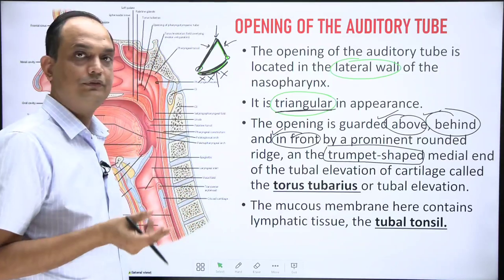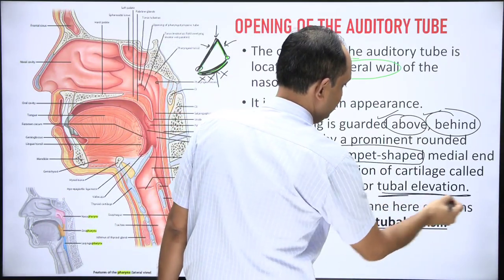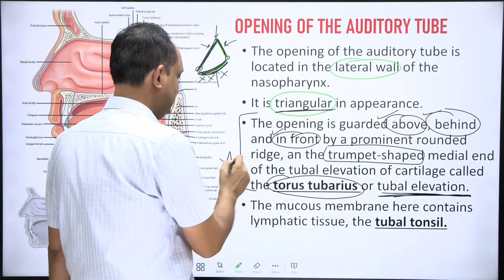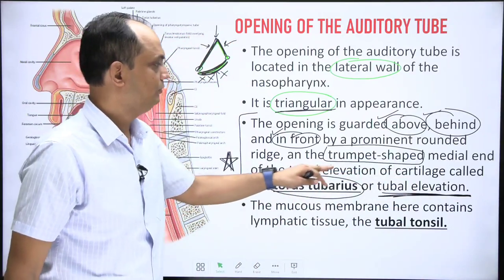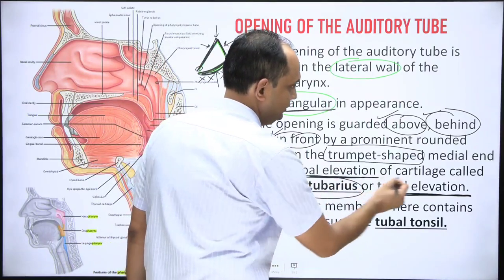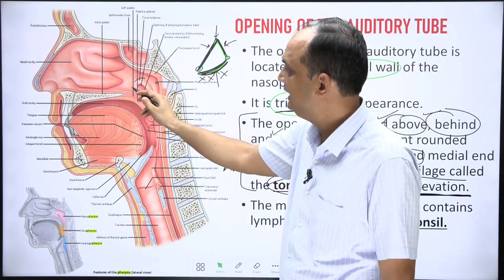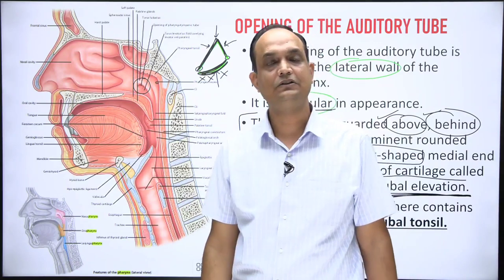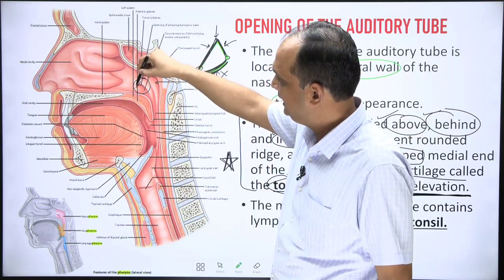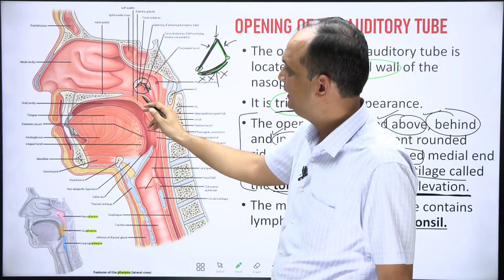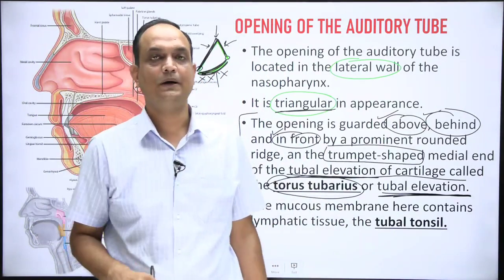The elevation of the cartilage is covered by mucosa, and this elevation is known as the torus tubarius or tubal elevation. The torus tubarius is the elevation of cartilage at the medial end of the auditory tube, facing inside the lateral wall of the nasopharynx. This elevation is present anteriorly, posteriorly, and superiorly, but not in the lower portion, which is smooth because cartilage is absent there.